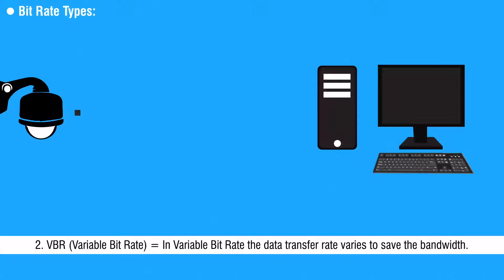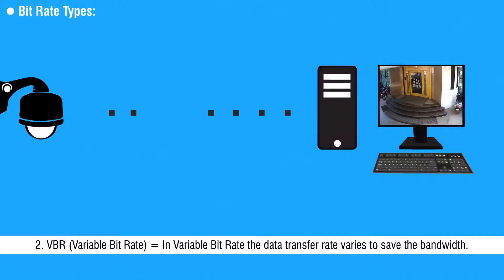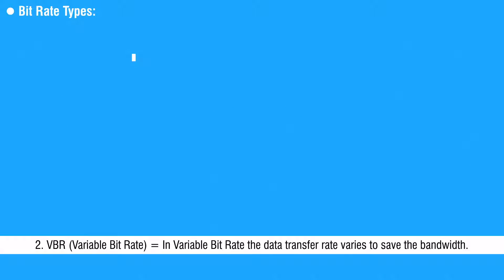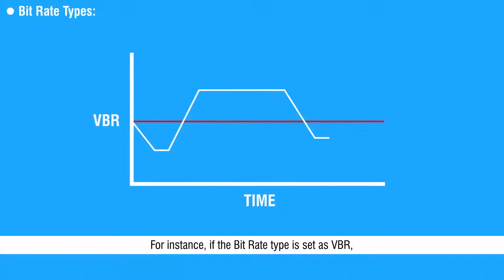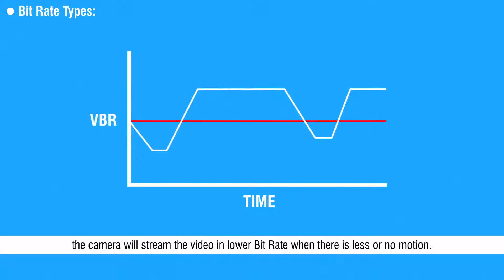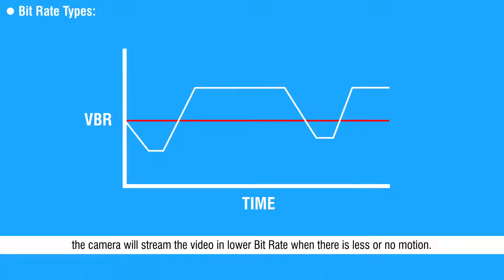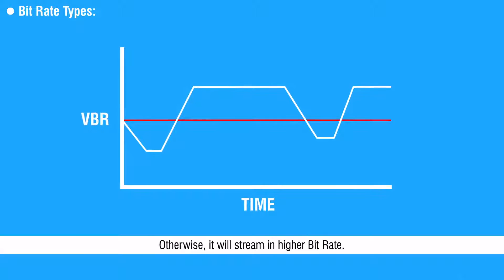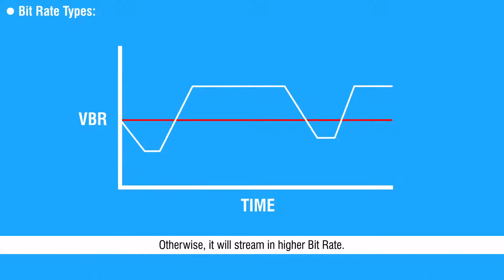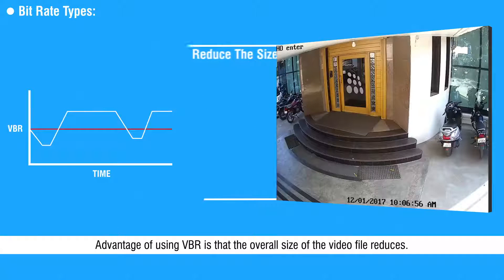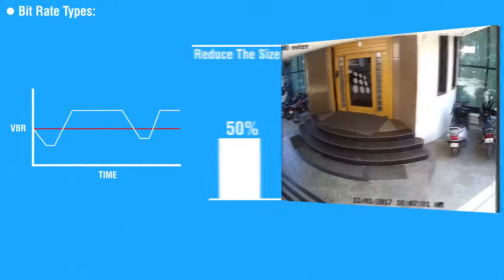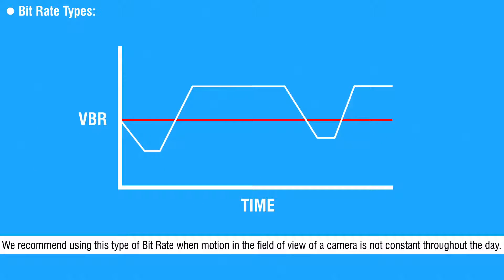The second type is VBR or Variable Bit Rate. In Variable Bit Rate, the data transfer rate varies to save the bandwidth. For instance, if the bit rate type is set as VBR, the camera will stream the video at a lower bit rate when there is less or no motion; otherwise, it will stream at a higher bit rate. The advantage of using VBR is that the overall size of the video file reduces. We recommend using this type of bit rate when motion in the field of view of a camera is not constant throughout the day.